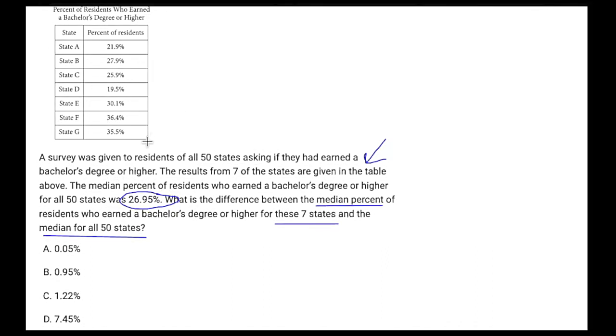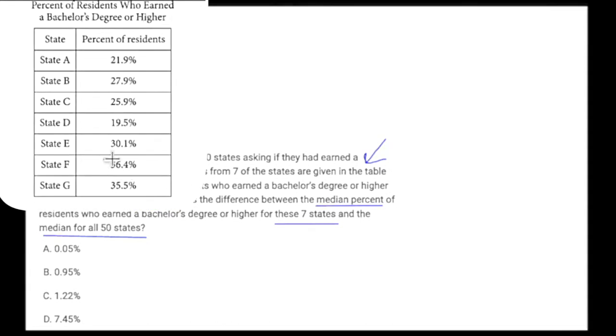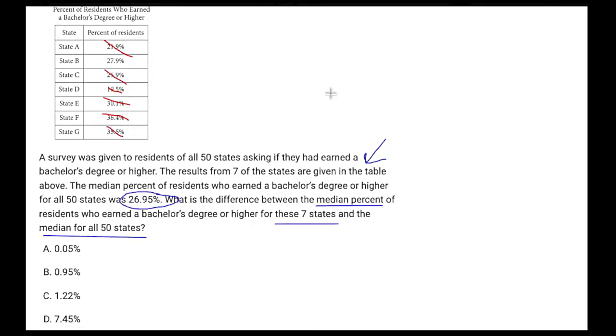Then to get our median, we can simply go through and eliminate the highest and the lowest. So 36 is the highest, 19 is the lowest, 35 is the new highest, 21 is the new lowest, 30 is the highest, 25 is the lowest. So we have 27.9 minus 26.95. It would just be 1, but because of that extra 5, it's going to be 0.95. So our answer is B, just like that.